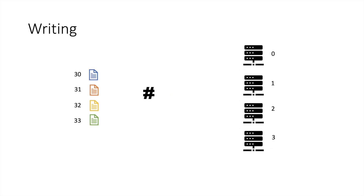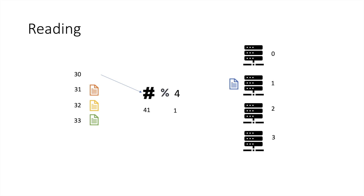Let us take an example. Suppose the ID of a document is 30 — you pass it through a hash function and it generates the number 41. Since we have four servers, we do mod 4, which results in 1. That means the blue document will be stored on server 1. Reading also happens the same way: pass the key through the hash function, it generates 41, mod 4 gives server 1, and the user gets the document from server 1.